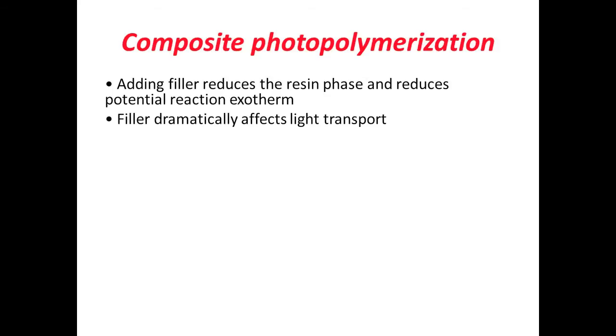In composite polymerizations, in terms of the composite materials, as we add the filler, we are reducing the volume fraction of the resin. In doing that, we reduce the exothermic potential of the material. The introduction of filler also affects how light is transmitted through the material. There's reflection, scattering, absorption, and all this leads to attenuation.